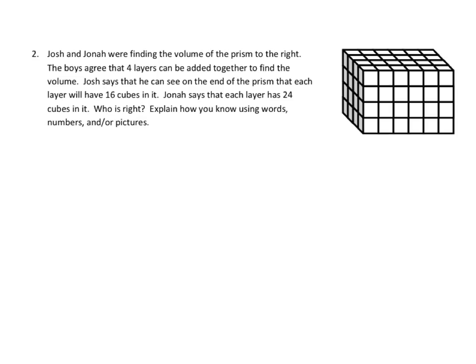Let's look at this word problem from the practice set. Joss and Jonah were finding the volume of the prism to the right. The boys agree that 4 layers can be added together to find the volume. Josh says that he can see on the end of the prism that each layer will have 16 cubes in it. Jonah says that each layer has 24 cubes in it. Who is right? Explain how you know by using words, numbers, or pictures.